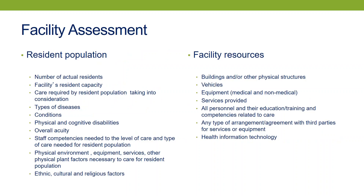Among the elements the facility has to examine for the assessment are all aspects of its resident population — you can see on the left side of the slide what must be considered when assessing the resident population — and the facility also has to look at its resources, shown on the right side of the slide. The assessment essentially defines 'sufficient nursing staff with the appropriate competencies and skill sets,' telling the facility the number of staff it needs as well as what competencies and skill sets are required. In CMS's words, this is really about the facility knowing itself, knowing its residents, and knowing its staff.